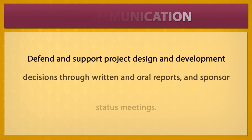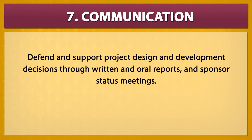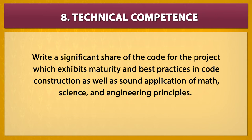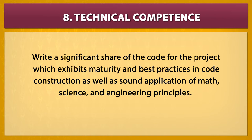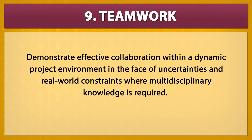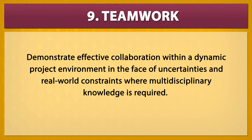Course Outcome 7, Communication. You'll defend and support project design and development decisions through written and oral reports and sponsor status meetings. Course Outcome 8, Technical Competence. You'll write a significant share of the code for the project which exhibits maturity and best practices in code construction as well as sound application of math, science, and engineering principles. Course Outcome 9, Teamwork. You'll demonstrate effective collaboration within a dynamic project environment in the face of uncertainties and real-world constraints where multidisciplinary knowledge is required.